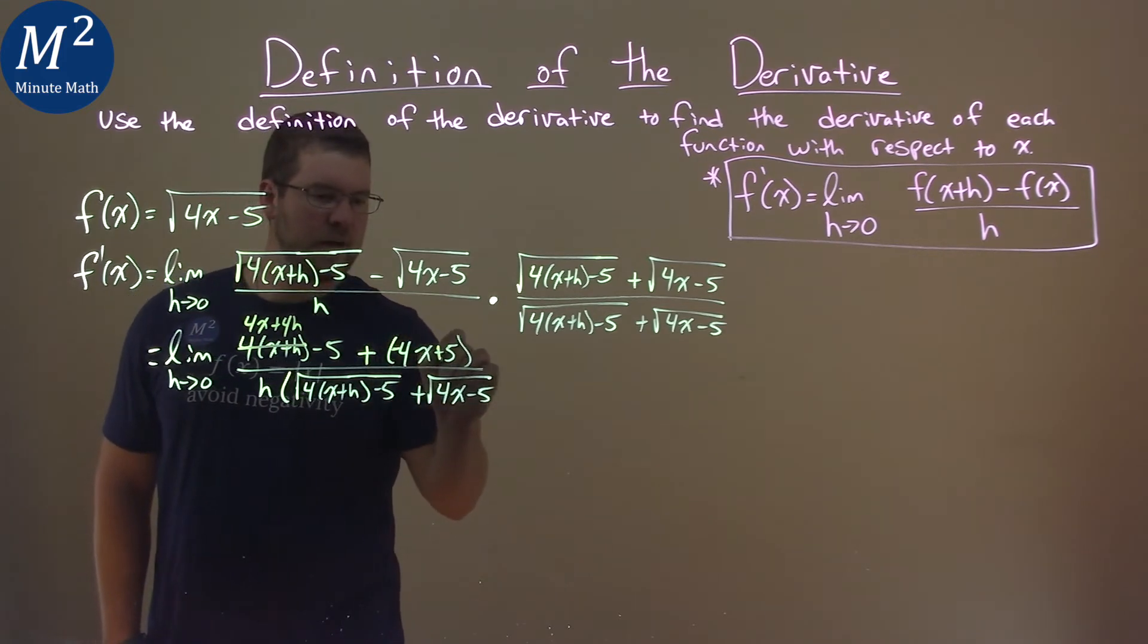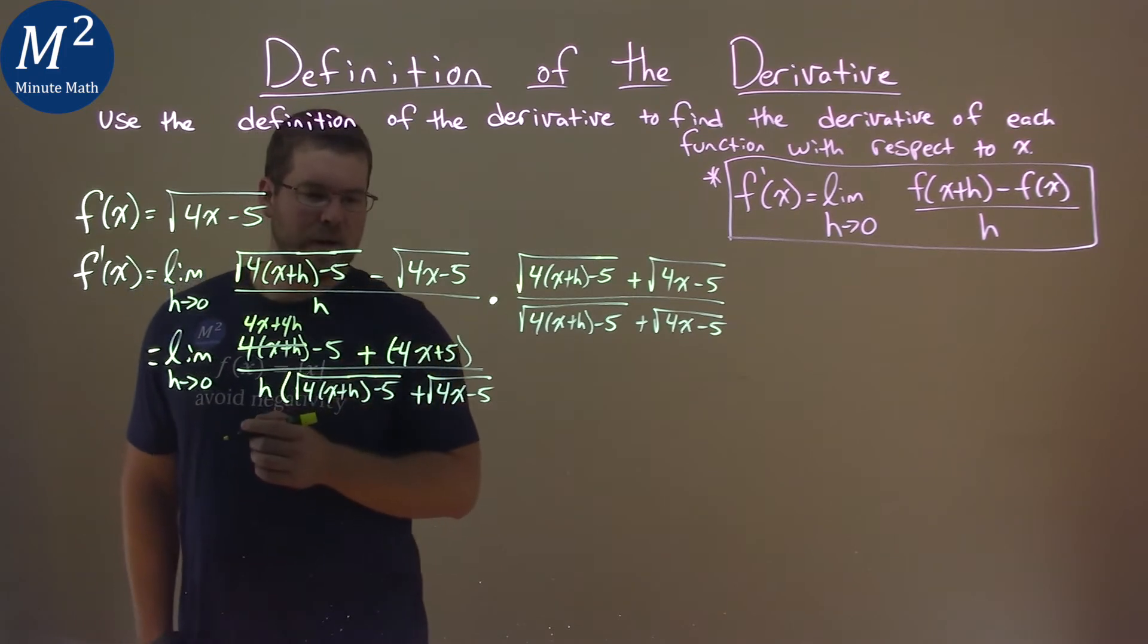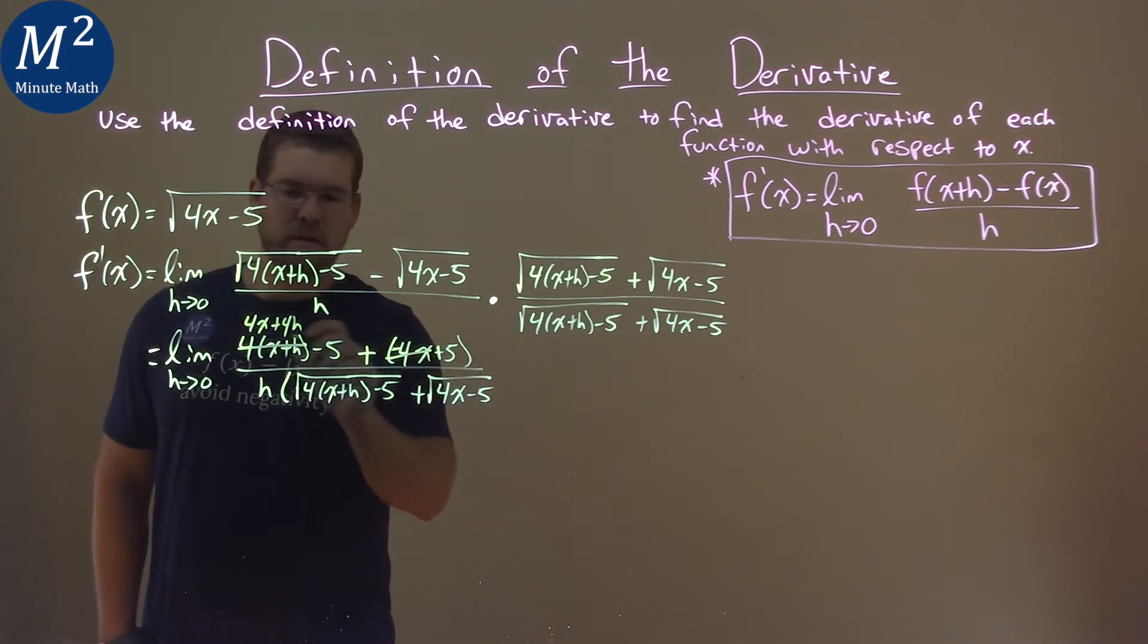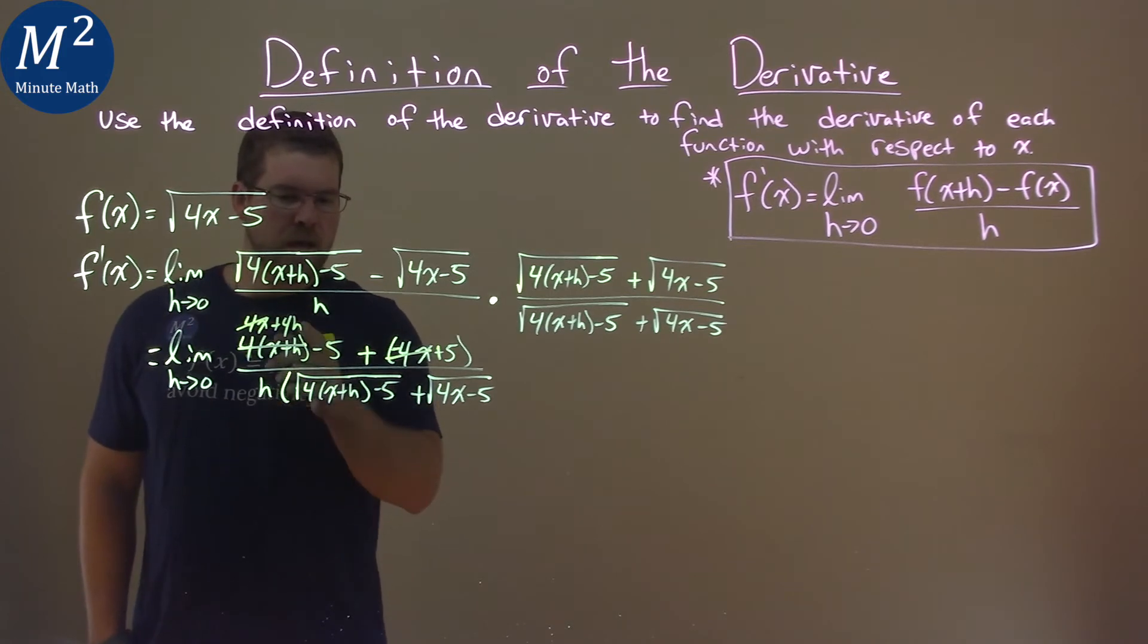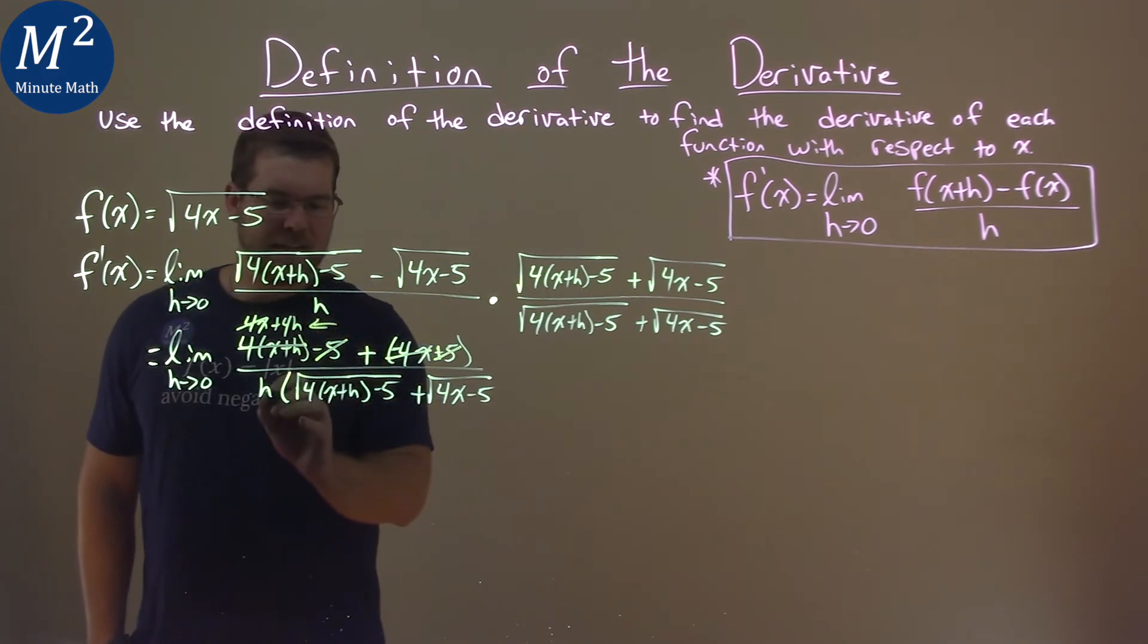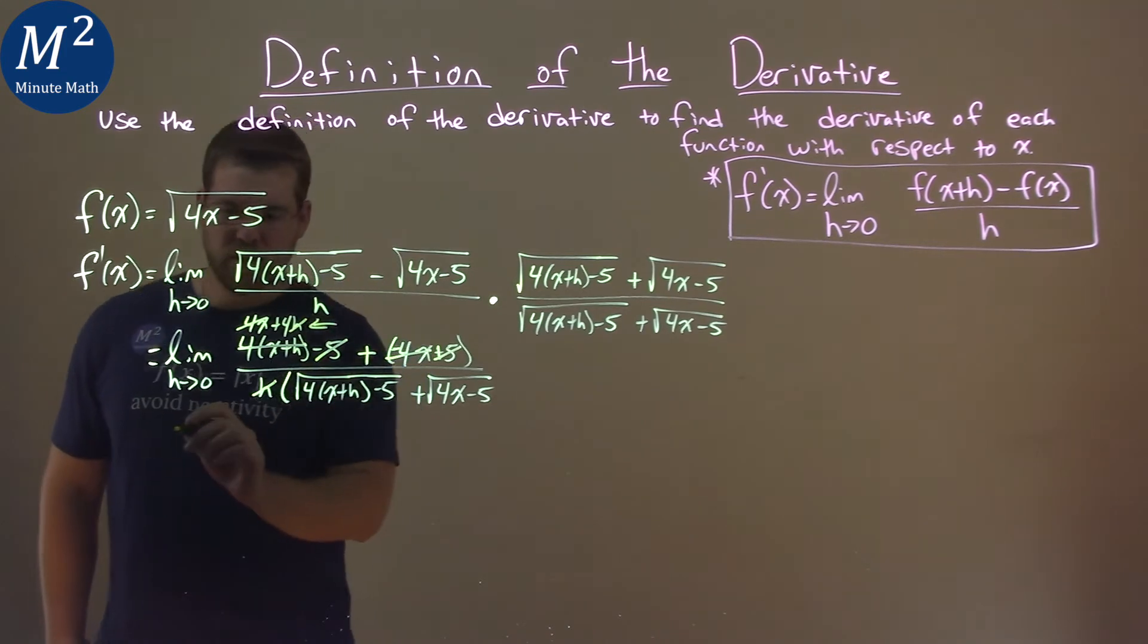Distribute the minus sign, so that's a minus, that's a positive. Now, I'm going to cancel what I can in the numerator. 4x right here, then minus 4x, they cancel. The 5s can cancel, negative 5 and positive 5, and so I'm left with just that 4h right here in the numerator. Now, there's an h down here. Well, the h is going to cancel. After all that, we see this.